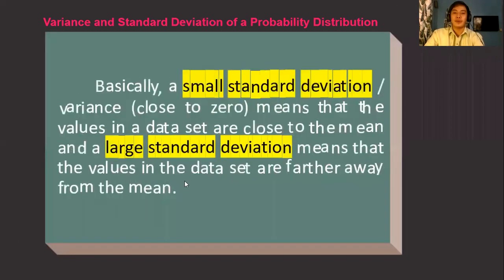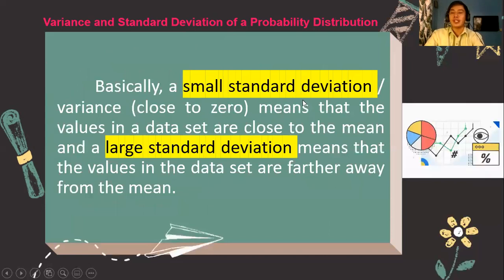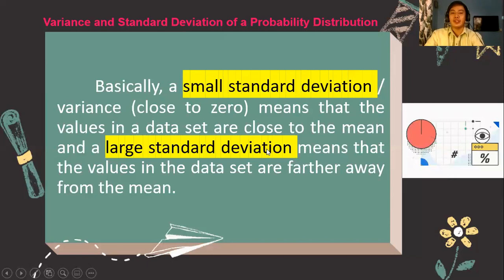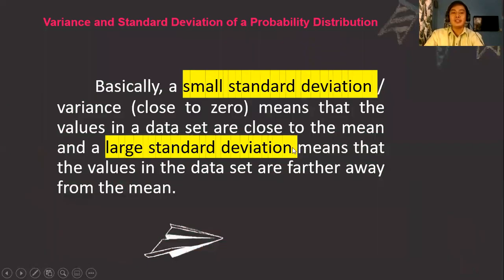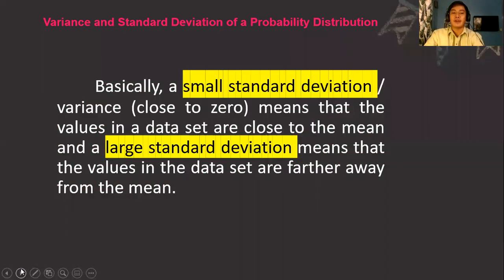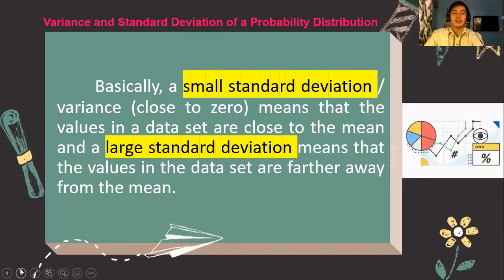Take note: when we say a small standard deviation or a small variance, it becomes closer to zero, meaning your data are homogeneous. While if you have a large value of the standard deviation or a large variance, that means the values are far away from the mean. The standard deviation is actually a distance from the center — it gives you an idea of how far the data are from the mean.